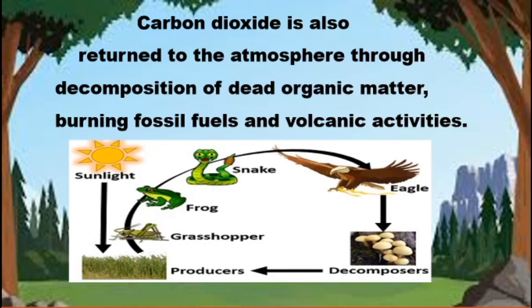Carbon dioxide is also returned to the atmosphere through decomposition of dead organic matter, burning of fossil fuels, and volcanic activities. This is how carbon deposits into the atmosphere — through burning fossil fuels, volcanic activities, and decomposition of dead organic matter.